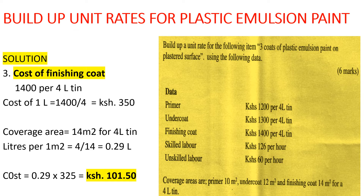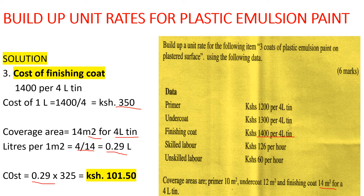The finishing coat is 1,400 per 4-liter tin with a coverage of 14 m² per tin. The cost of one liter is 1,400 divided by 4, giving us 350 shillings. Liters needed per m² is 4 divided by 14, giving us 0.29 liters. The cost of the finishing coat per m² is 0.29 times 350, giving us approximately 101.50 shillings.